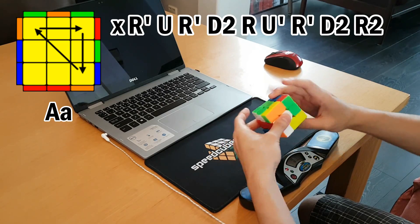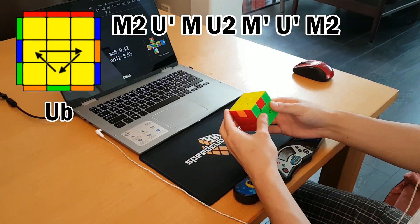Now I can do every PLL sub-1, except for the N perms, because I just can't, but I'm really close.